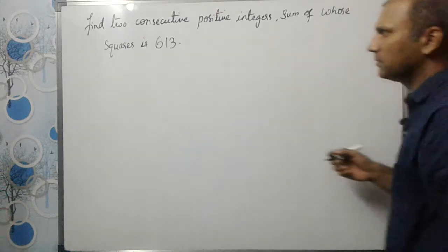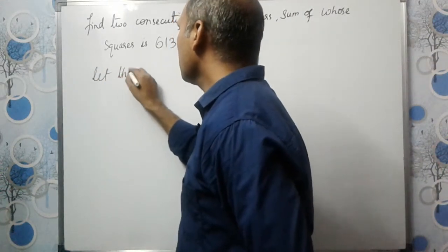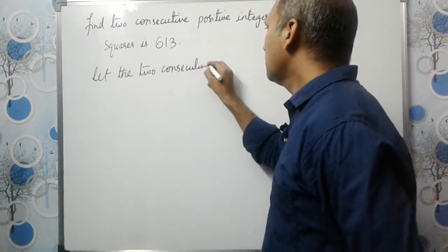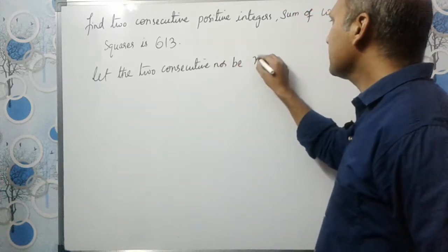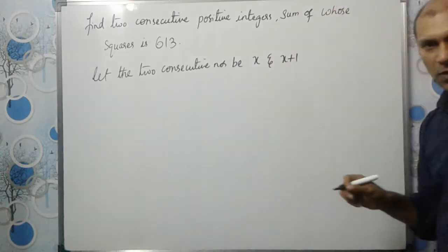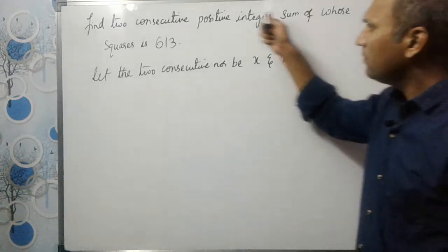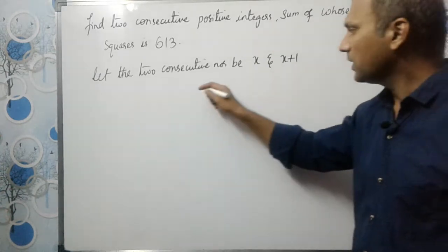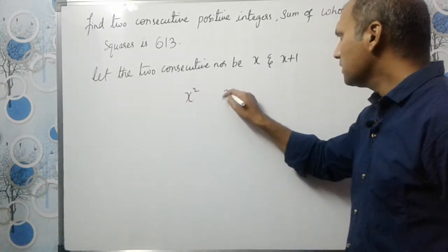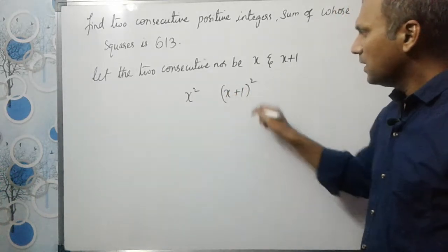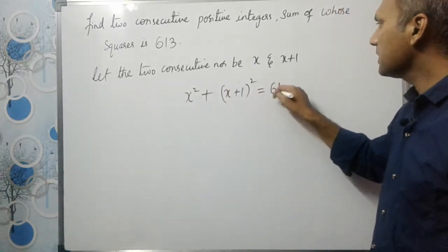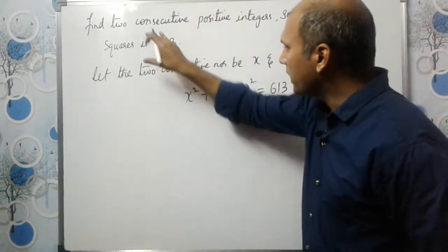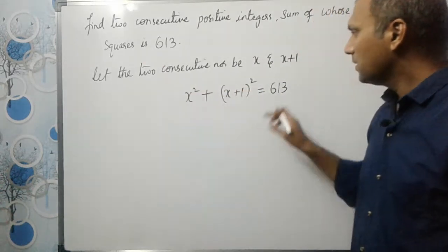Let the two consecutive numbers be x and x plus 1. What is given? The sum of their squares — that means the square of the first term plus the square of the second term — is equal to 613. So x squared plus (x plus 1) squared is equal to 613.